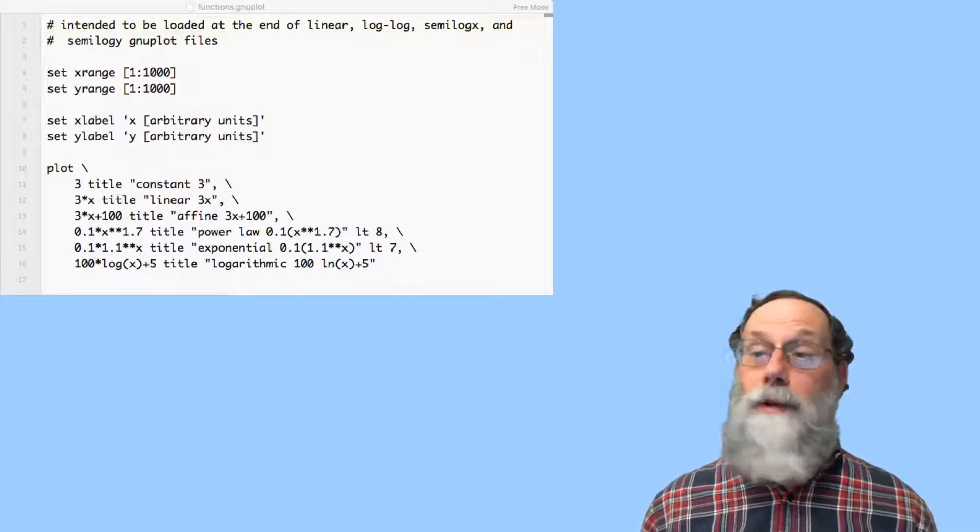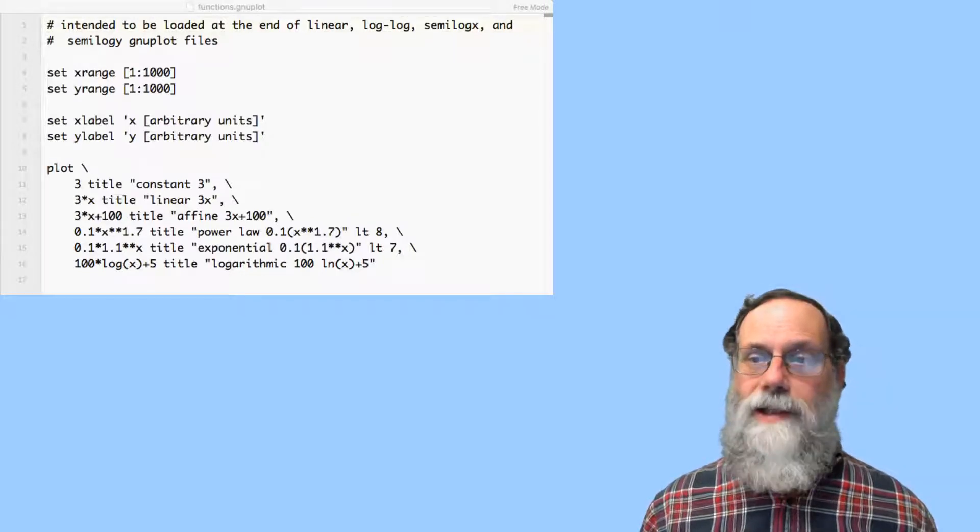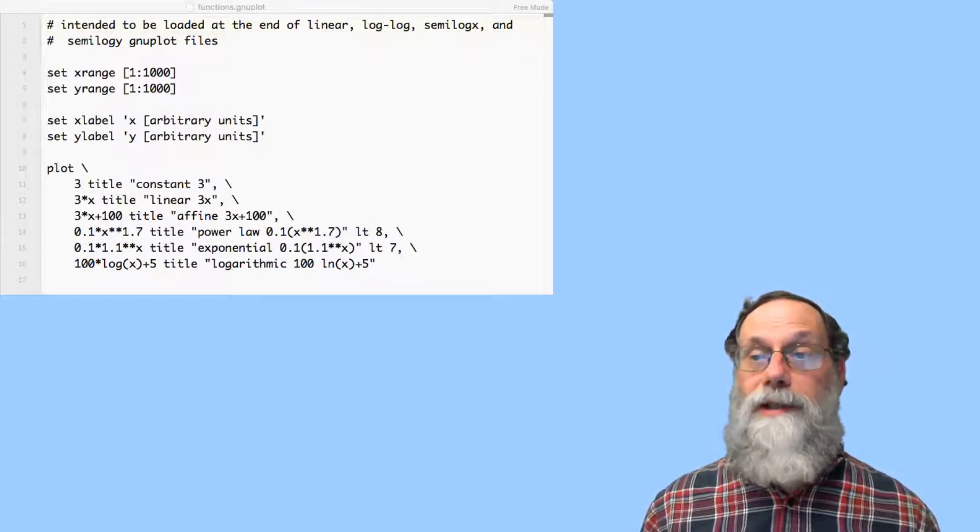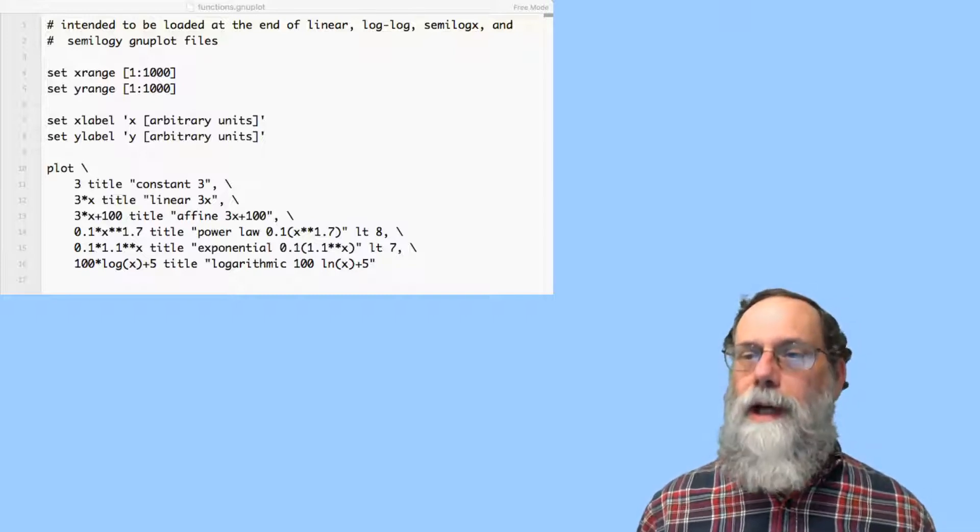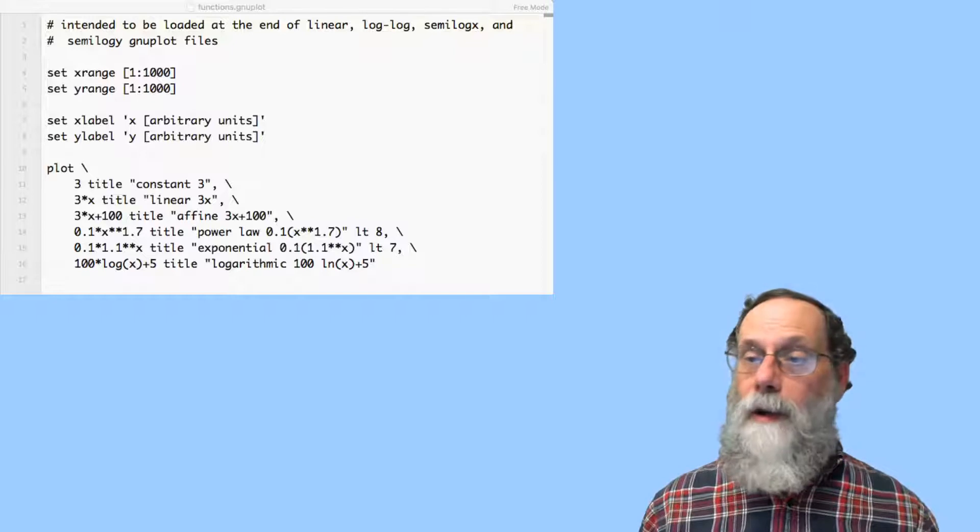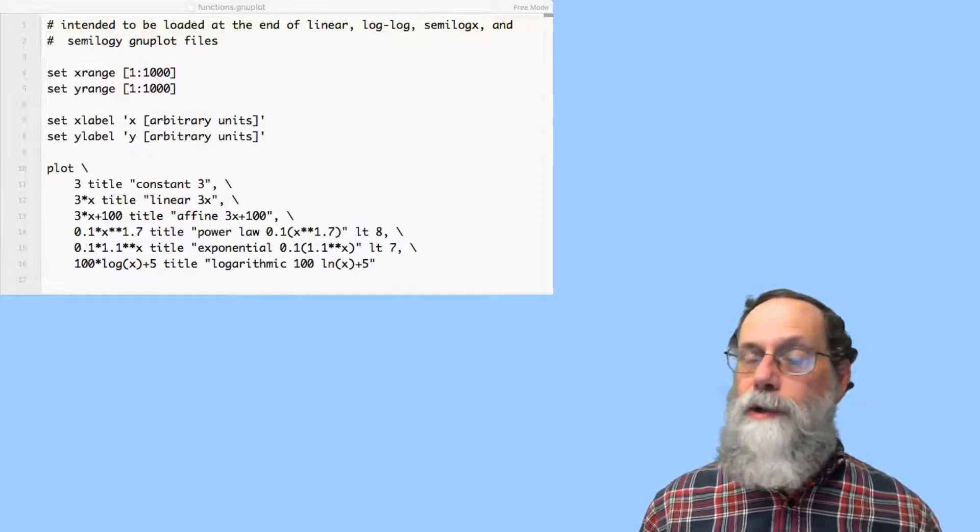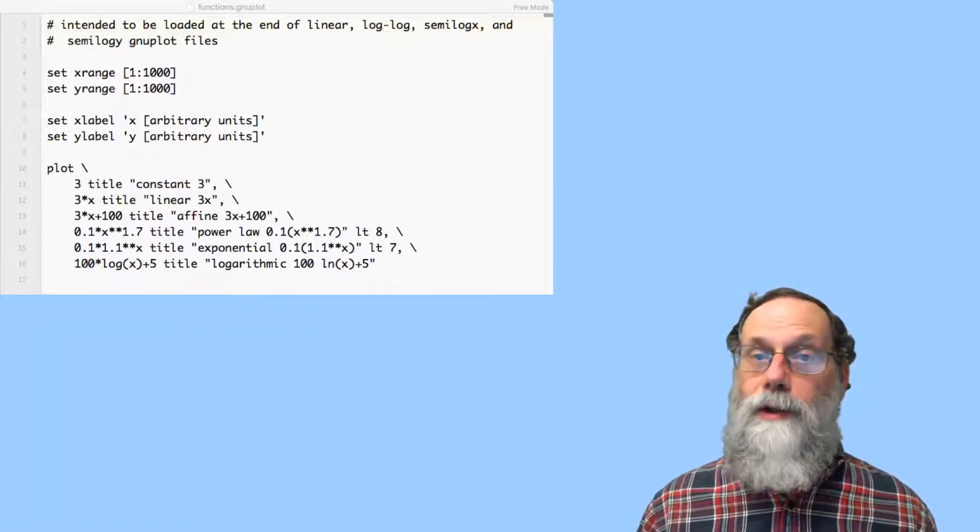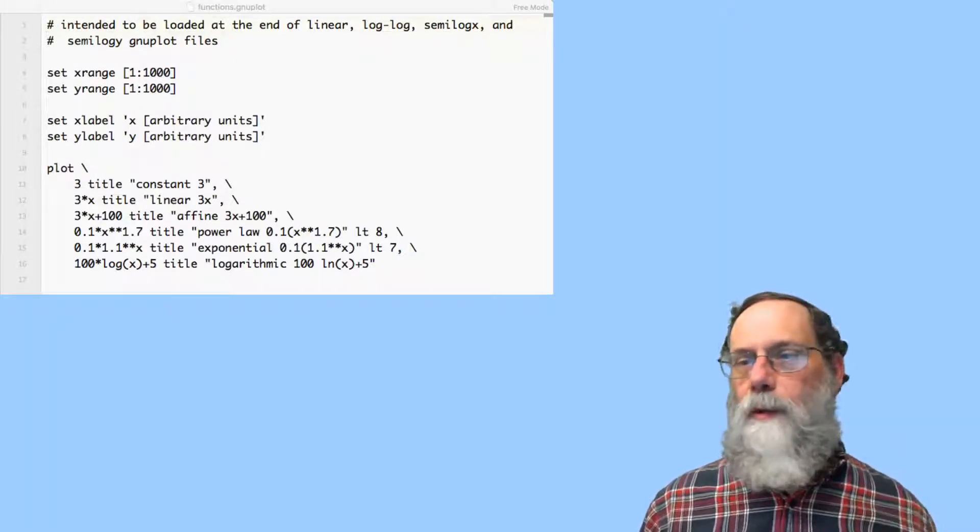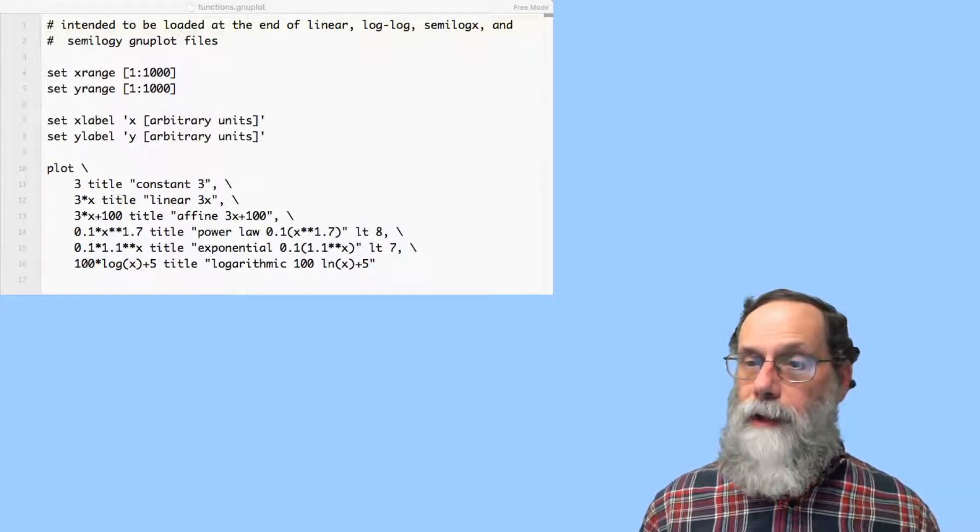And I have labels for my x and y axis. Normally these axes should be labeled with something meaningful. Is this time? Is this voltage? Is this concentration? What is it that you're putting on this axis? Here, because I'm dealing with completely arbitrary functions that have no intrinsic meaning, there are no real units associated with these things, there's no interpretation associated with them, I've just labeled them x and y with arbitrary units.